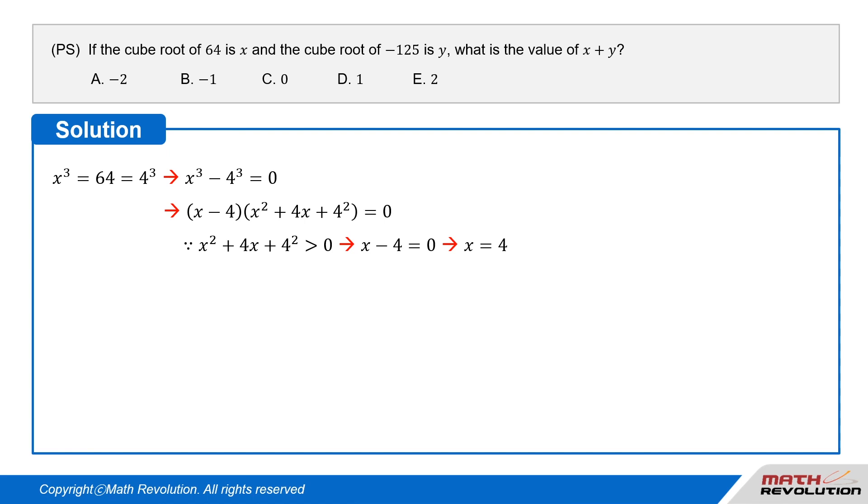x cubed equals 64 equals 4 cubed. So, x cubed minus 4 cubed equals 0.